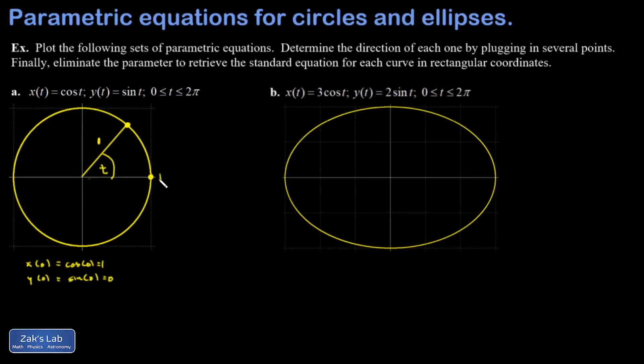The next really special point that I'd like to plug in is pi over two. x of pi over two is cosine of pi over two, but that's zero. y of pi over two is the sine of pi over two, but that's one. I end up with the point zero one, which should be a familiar result. So that happens when the angle t is pi over two.